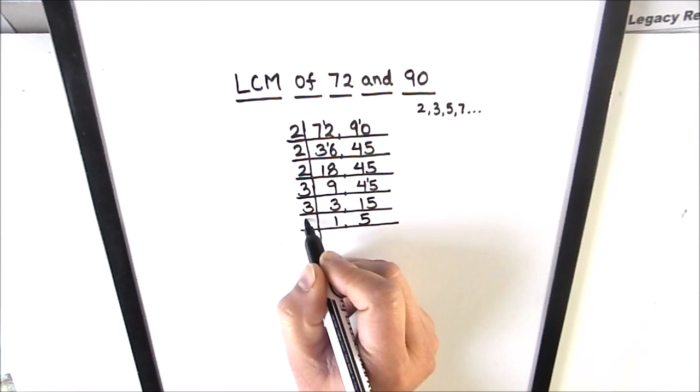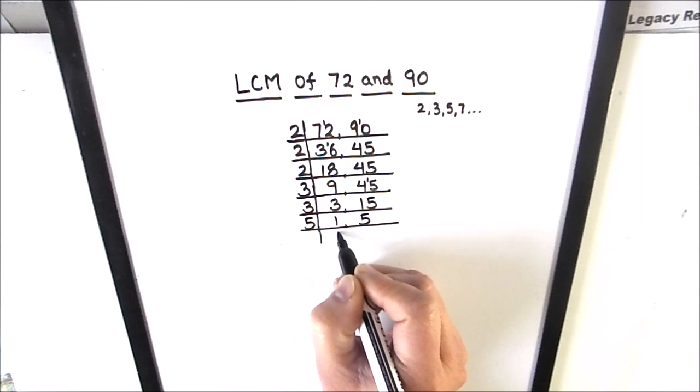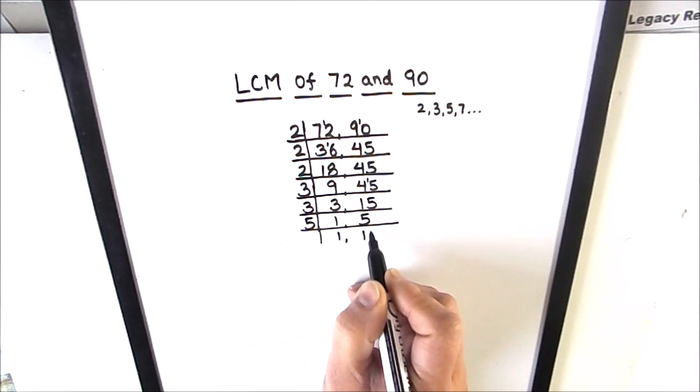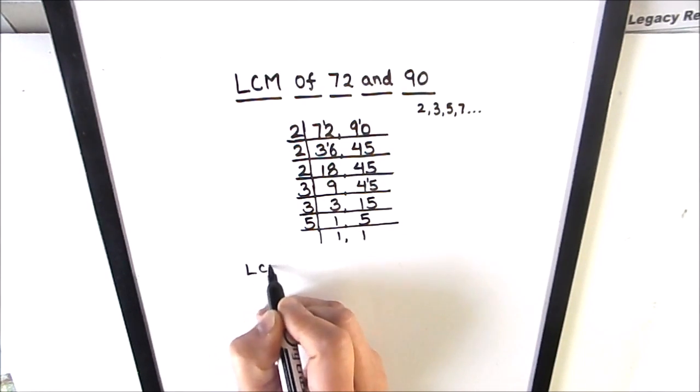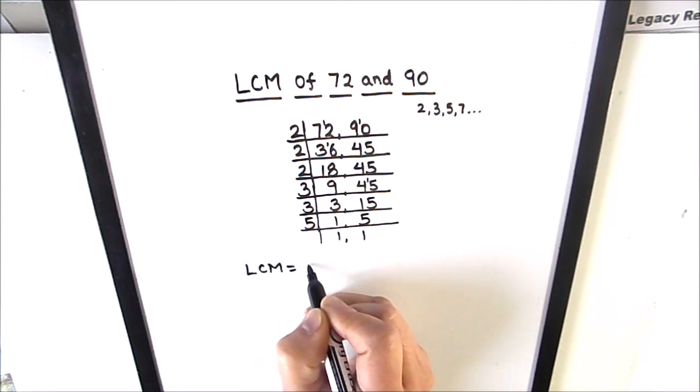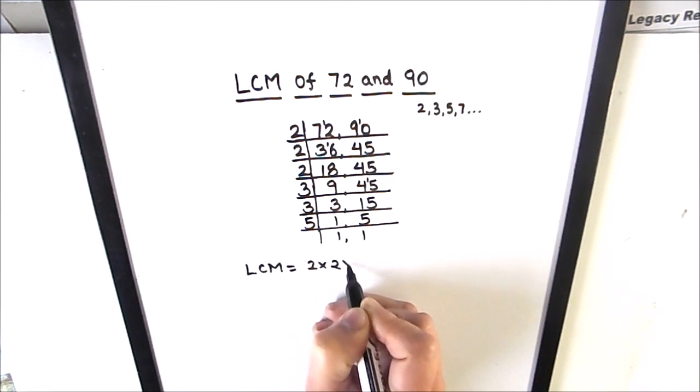5 is a prime number, it is only divisible by number 5: 5 times 1 is 5. Now to find the LCM we are going to take the product of all the numbers which are on the left hand side of the ladder.